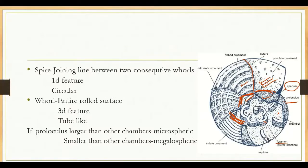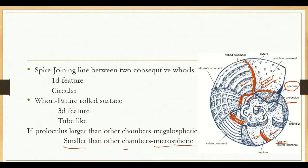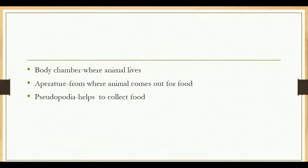The septum separates two successive chambers — this wall between chambers is the septa, and the line of junction visible on the outside is called the suture. The proloculus is the first chamber: a larger proloculus is called megalospheric and a smaller one is microspheric. The body chamber is the final chamber where the animal lives.